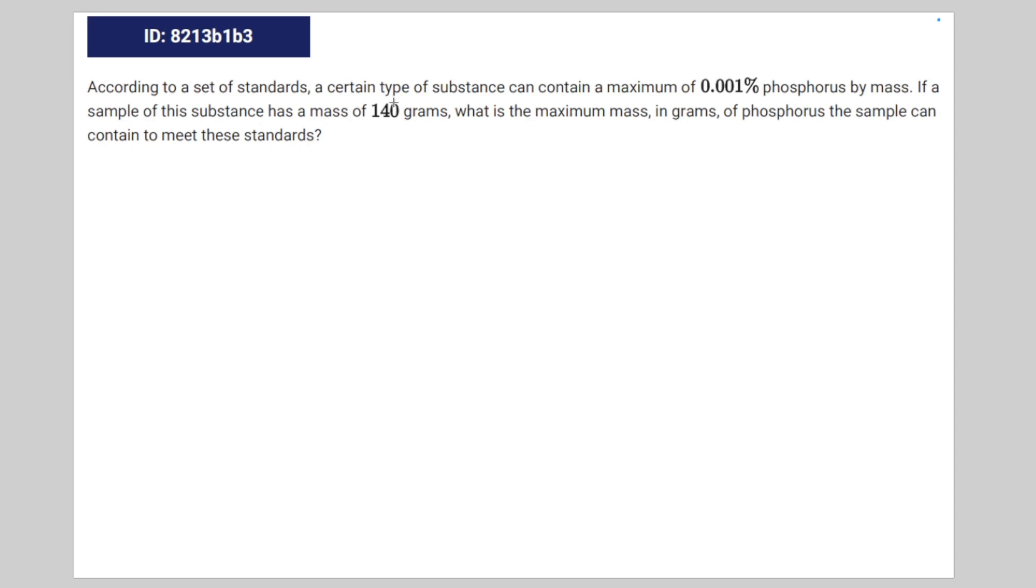So you're just going to take these two numbers, 140 and 0.001, and multiply them together. But you also have to consider that percentages are really just decimals but times 100. So you're really just going to multiply 140 by 0.0001 instead of 0.0001.